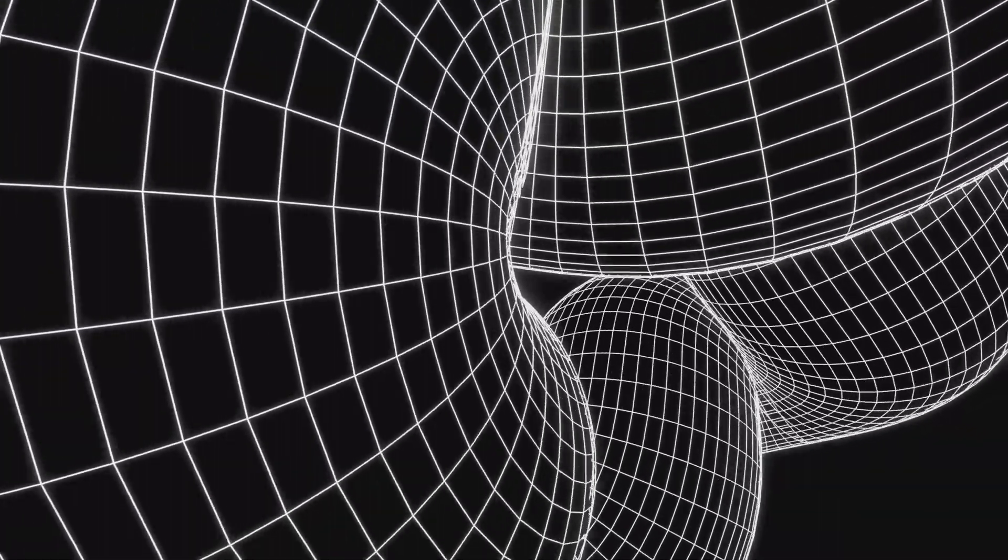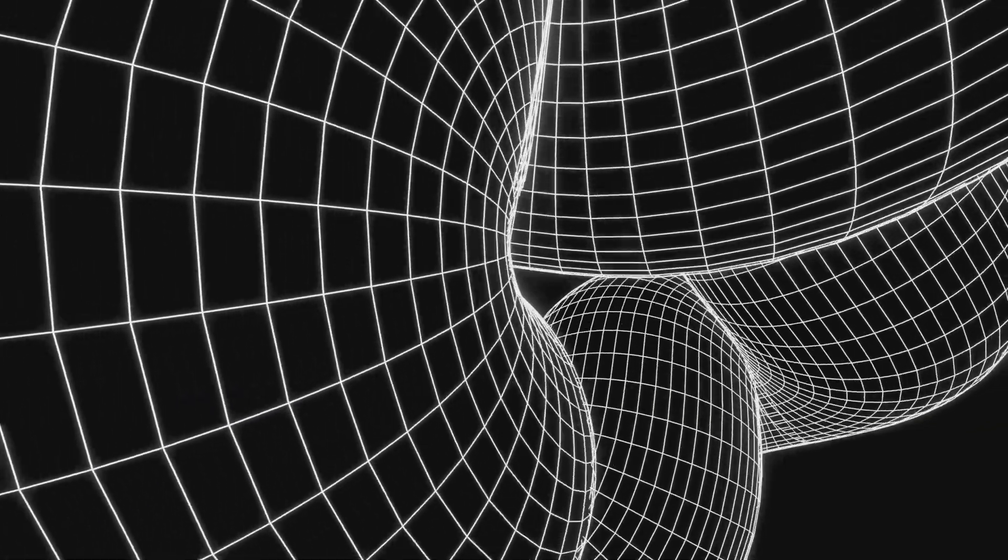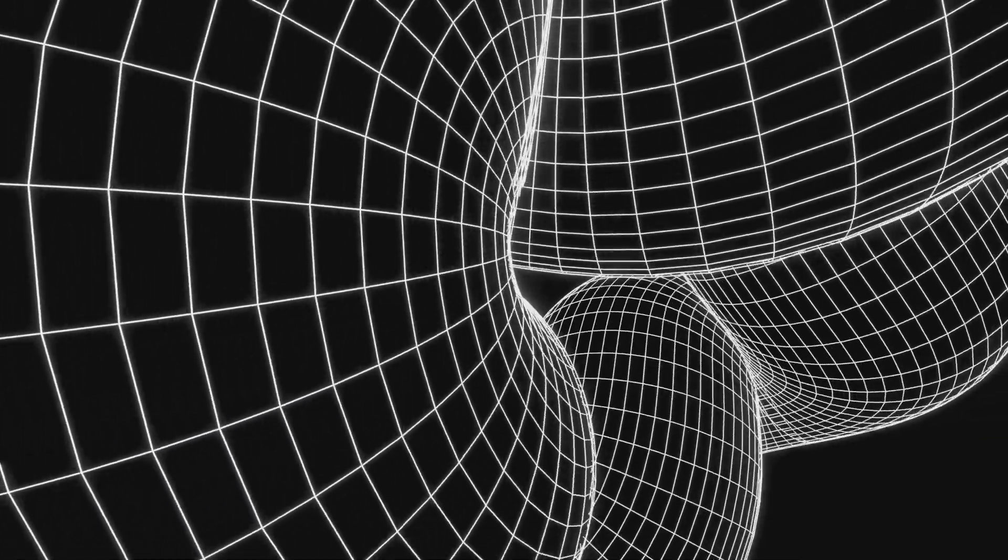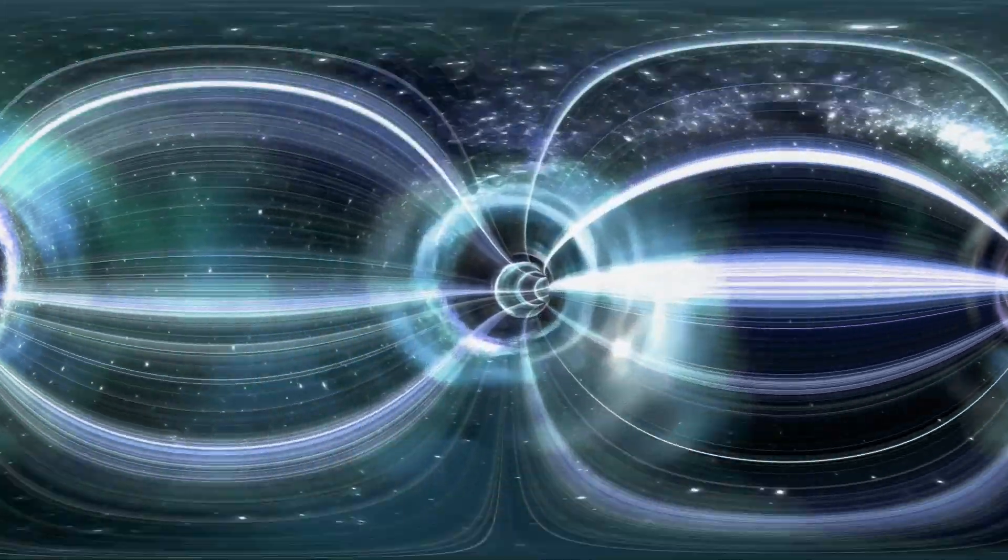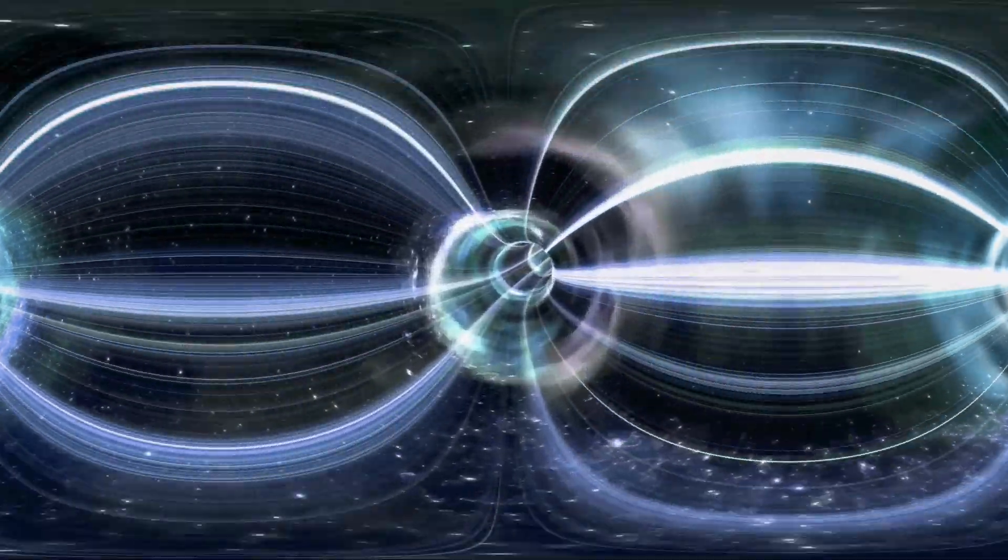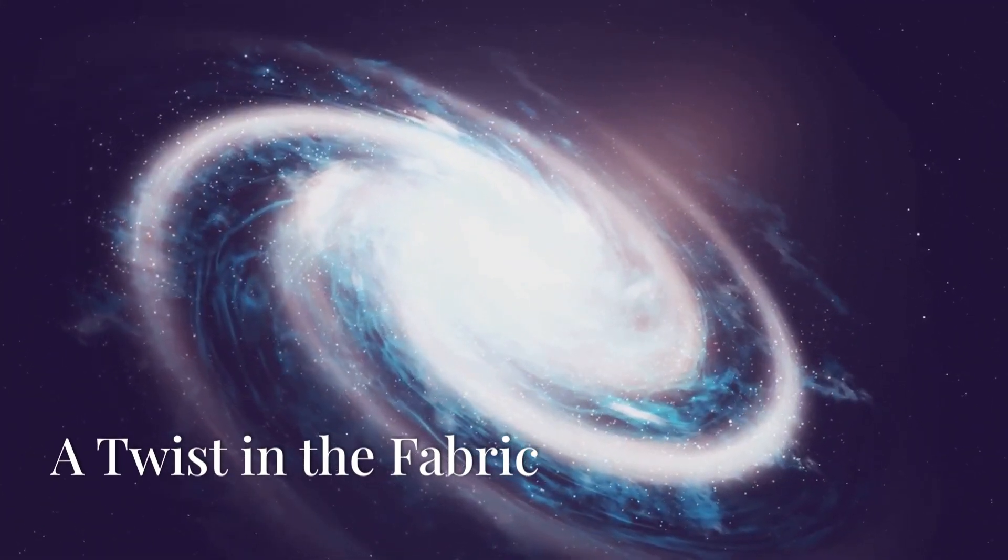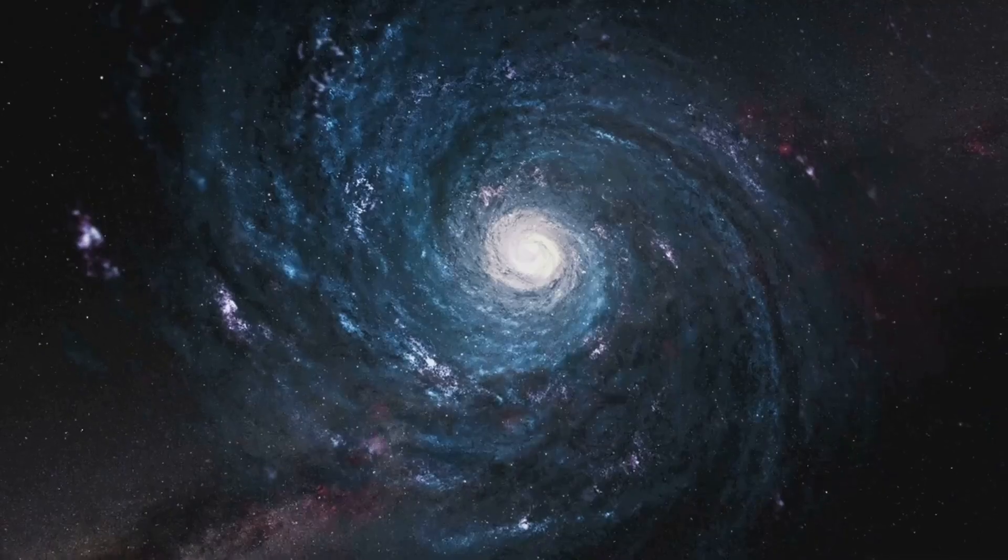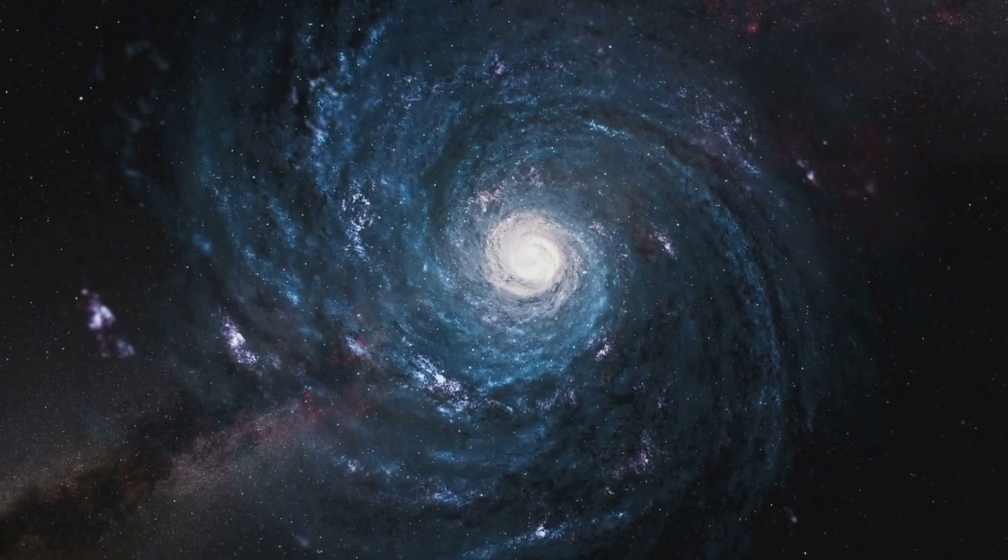If the universe does spin, it would have profound implications for our understanding of physics, particularly for our theories of gravity and spacetime. A spinning universe could exert a subtle but pervasive influence on the fabric of spacetime, potentially creating distortions that could allow for the manipulation of time. Imagine this universal spin as a subtle twist in the fabric of spacetime, a cosmic vortex that warps the flow of time in ways we are only beginning to comprehend.